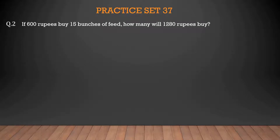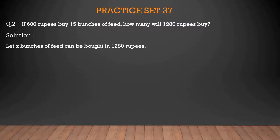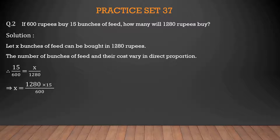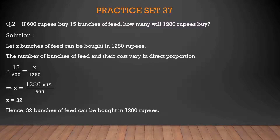Second question: If 600 rupees buy 15 bunches of feed, how many will 1280 rupees buy? Let X bunches of feed can be bought for 1280 rupees. The number of bunches of feed and their cost vary in direct proportion. So 15/600 = X/1280. Therefore X = 1280 × 15 ÷ 600 = 32. Hence, 32 bunches of feed can be bought for 1280 rupees.